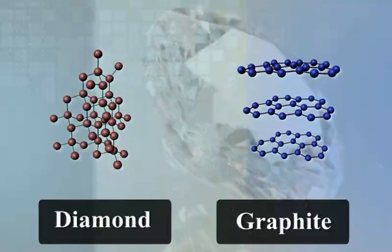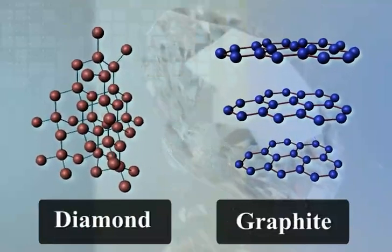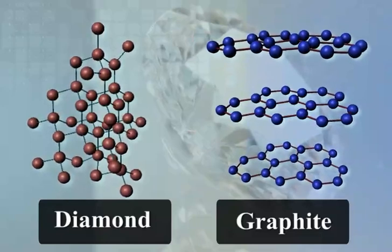Due to this difference in the structure of diamond and graphite, they have very different physical properties, even though their chemical properties are the same.